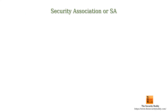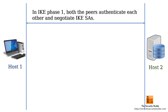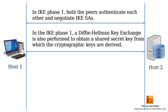Using a Security Association (SA), two hosts can negotiate shared security attributes between them. These attributes may include cryptographic algorithms, mode, traffic encryption keys, and more. In IKE Phase 1, a Diffie-Hellman key exchange is also performed to obtain a shared secret key, from which the cryptographic keys are derived.